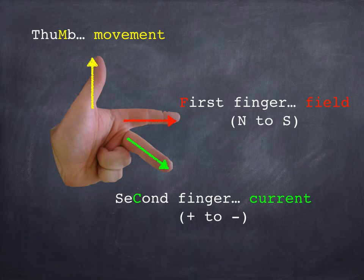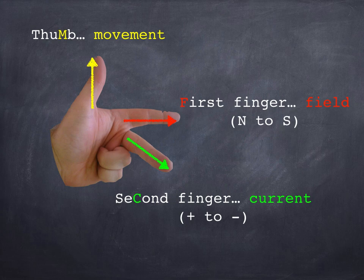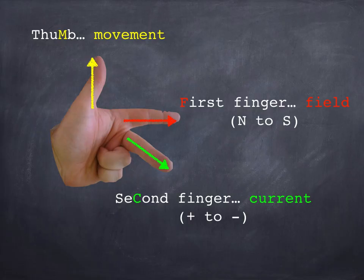Now in any question you are given, you're always going to know two of these three things. So all you have to do is line up the two things that you know with your hand and see which direction the other finger or thumb is pointing. Normally we get given the field and the current and we have to predict the direction of the force, the direction of the movement.